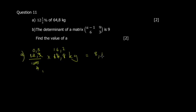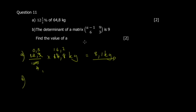Half of 16.2 gives you 8.1 kg. Knowing that this was 1/8, dividing by 1/8 also gives 8.1. There are many ways to go about it — just make sure you get this answer and you'll be fine.